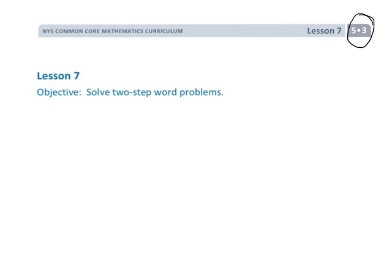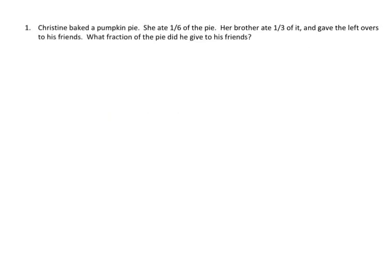This is fifth grade module 3 lesson 7, and we're going to be using tape diagrams to solve two-step word problems. Christine baked a pumpkin pie. She ate a sixth of the pie, and then her brother ate a third of it, and then gave the leftovers to his friends. What fraction did he give to his friends?